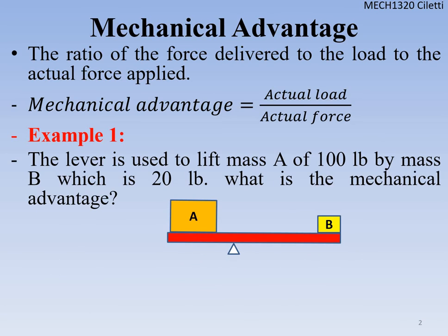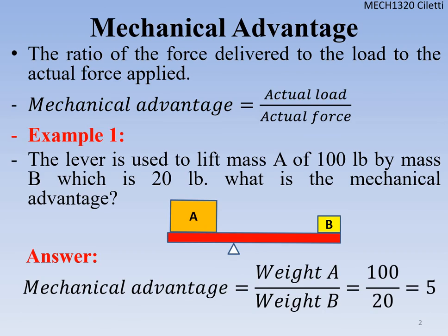Let's take a look at an example. We have a lever used to lift mass A of 100 pounds by mass B of 20 pounds. Mass A is the actual load we're trying to lift, and mass B is the force. So the mechanical advantage is 100 divided by 20, which equals 5.